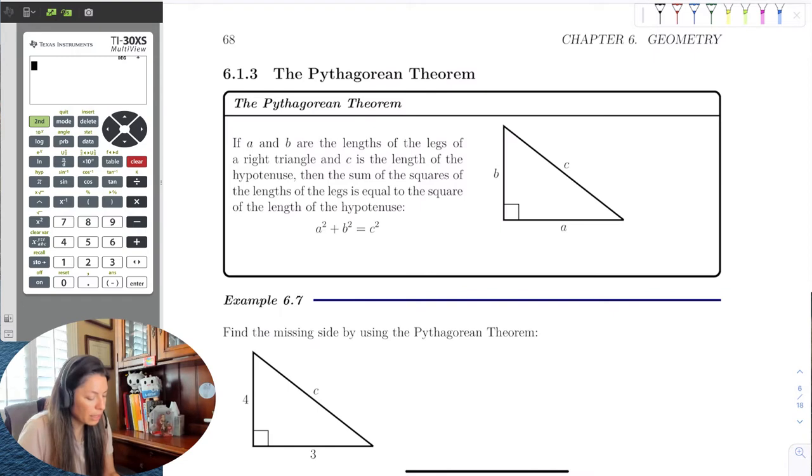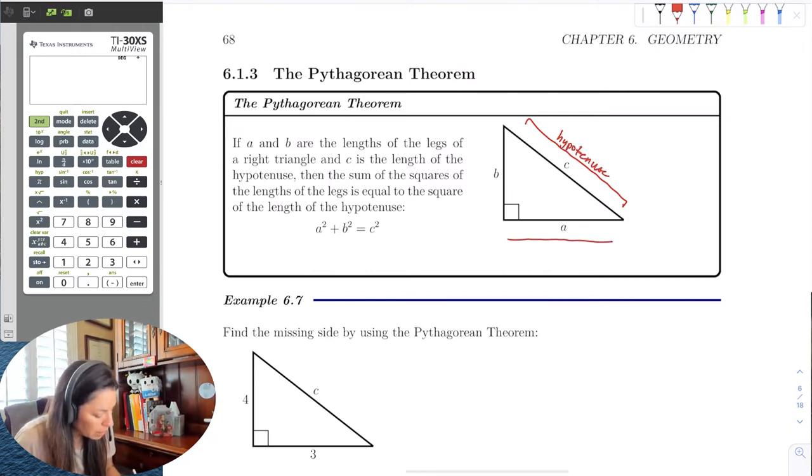If we can see here, A and B are the legs or the edges of the triangle. And C is what we call the hypotenuse. So that little diagonal edge is called the hypotenuse. These pieces here are called the legs.